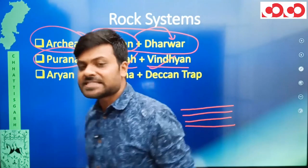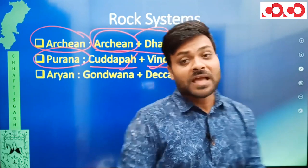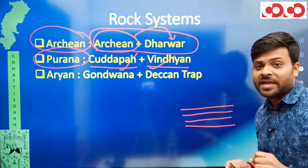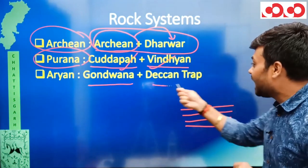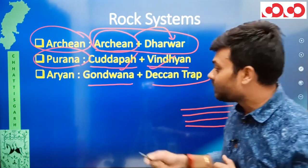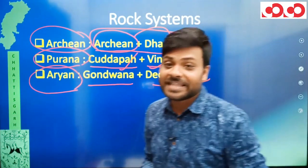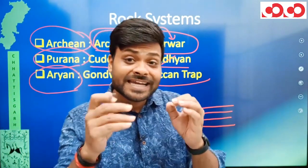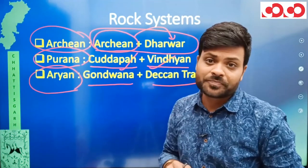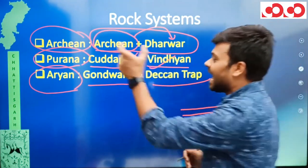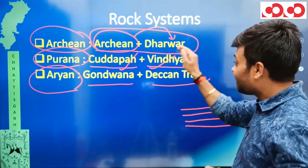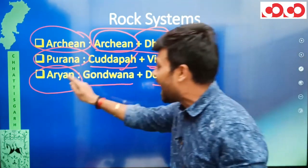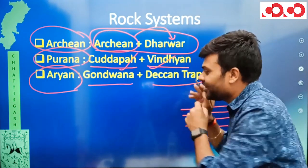Later, as time progressed, many rocks formed on Earth. Since we are studying 36 Garh, we are only concerned with 36 Garh. In the 36 Garh area, two rocks formed — one was Gondwana and the other was Deccan Trap — and both together are called the Aryan Rock Series. These three basic rock systems are: first, the Archean Rock System (Archean and Dharwar rocks); second, the Purana Rock System (Kadapa and Vindhyan rocks); and finally, the Aryan Rock System (Gondwana and Deccan Trap rocks).